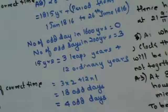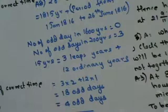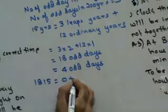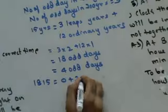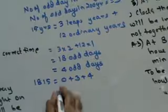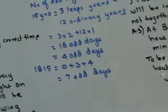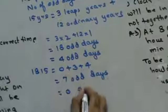To find odd days: divide the given number by 7 and the remainder is the number of odd days. So 1815 years has 0 + 3 + 4 = 7 odd days. 7 divided by 7 = 0 remainder, so 1815 years has 0 odd days.